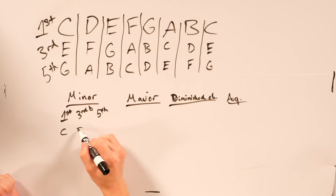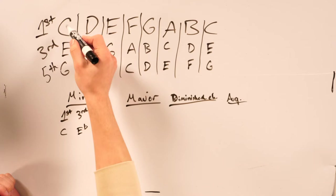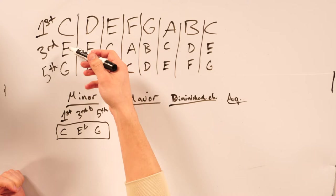So if we had C, which we have up here, we have C for the first, E for the third, and G for the fifth, and we need to flat that third. So your C minor chord would be C, E flat, G, instead of C, E, G, which would be the major.